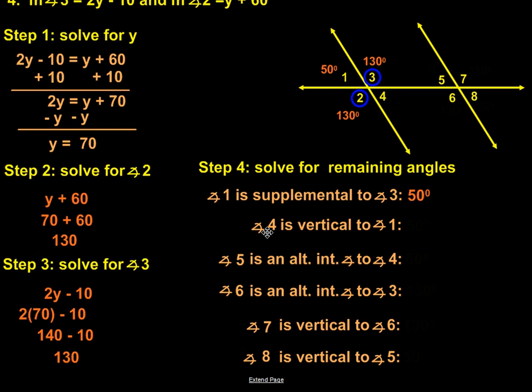Now we're going to take a look at angle four. Angle four is vertical to angle one, which means it has to have the same value as angle one, which gets us 50 again.